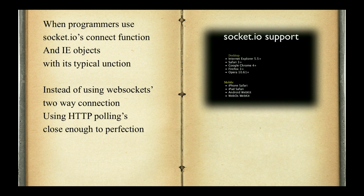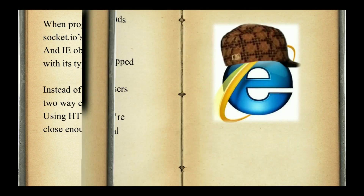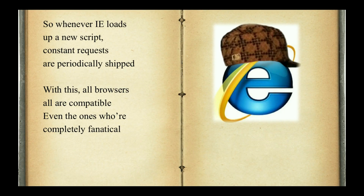When programmers use Socket.io's connect function, and IE objects with its typical unction, instead of using WebSocket's two-way connection, using HTTP polling — close enough to perfection. So whenever IE loads up a new script, constant requests are periodically shipped. With this, all browsers are compatible, even the ones that are completely fanatical.